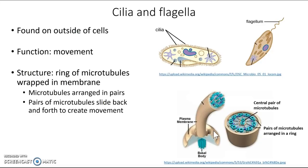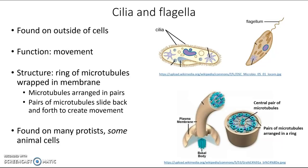At the bottom of the structure, inside the cell, anchoring it is something known as the basal body — you don't need to know that, but it is also made of microtubules. Cilia and flagella are found on many protists and some animal cells, as well as the sperm cells of animals and some types of plants, but in general we assume that plants do not have cilia or flagella.